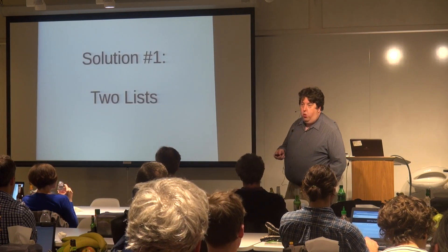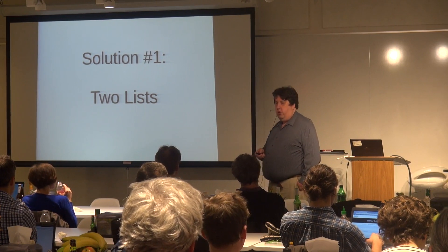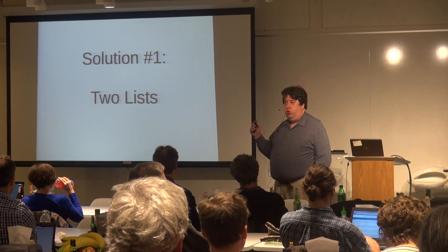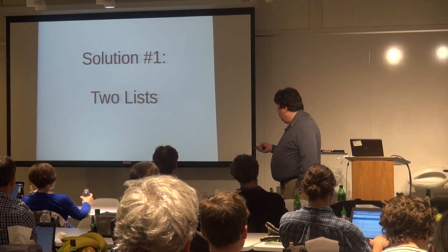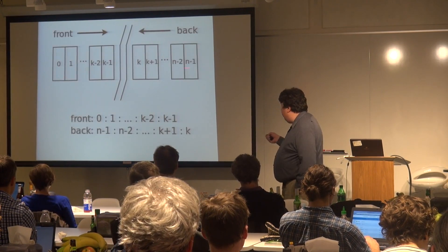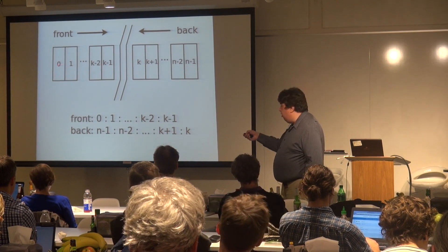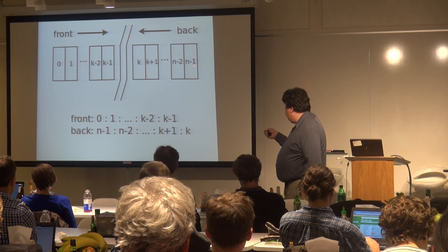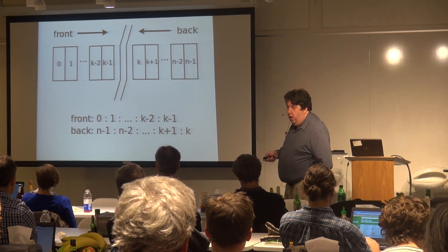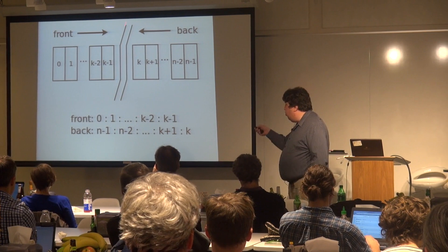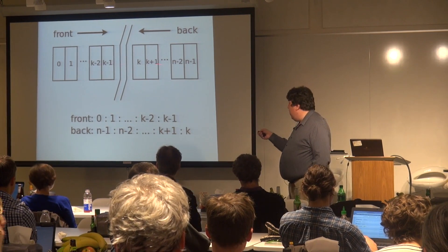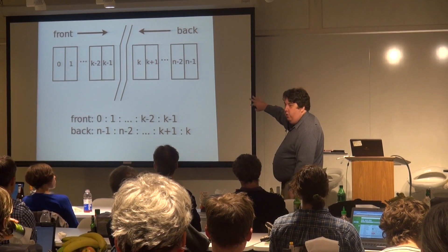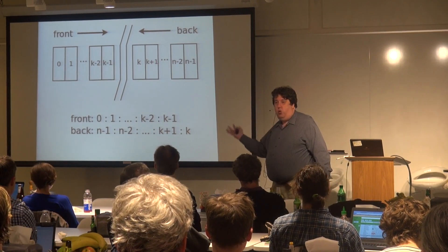Solution number one — I call it the two-list solution. The idea: we have our sequence of elements from element zero through element n minus one. We're going to break this into two parts — a front piece and a back piece. What's interesting is we're going to take the back piece and store it in backwards order. So our front list will be elements zero through k minus one, and the back list will have element n minus one as the head, coming in from the back going backwards.